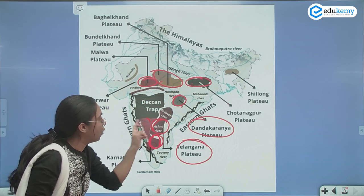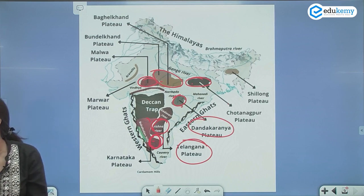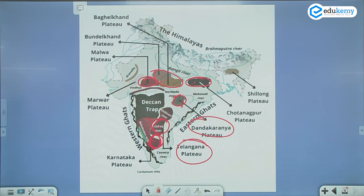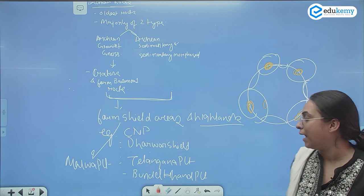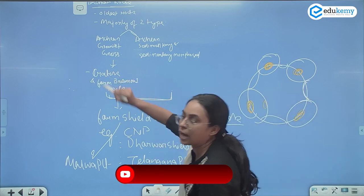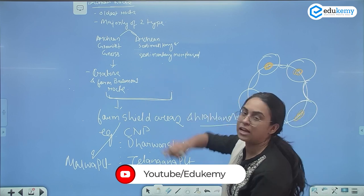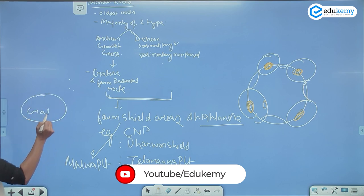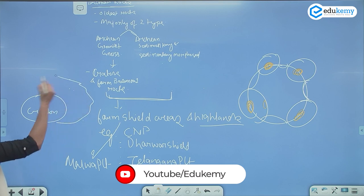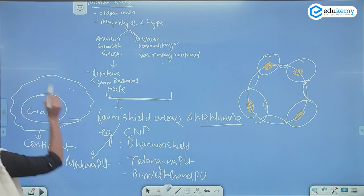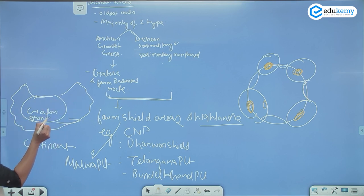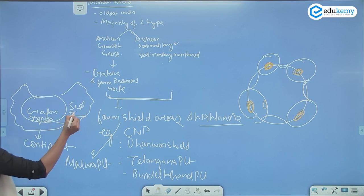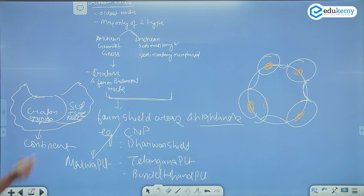So the rocks that I am talking about — which give stability to the continent, which give stability to the peninsular plateau — are these rocks. Basically, referring to the types of rocks in India, the oldest rock is called the Archean rock. The Archean rocks are of two types: one is Archean granite plus gneiss, the hard rock; the other is Archean sedimentary and metamorphosed. This forms a Craton. The Craton gives stability to the continent. The part of the Craton that gets exposed becomes a shield.